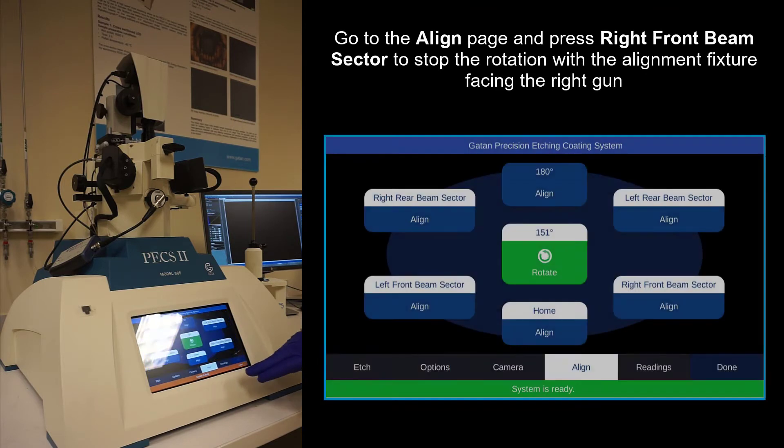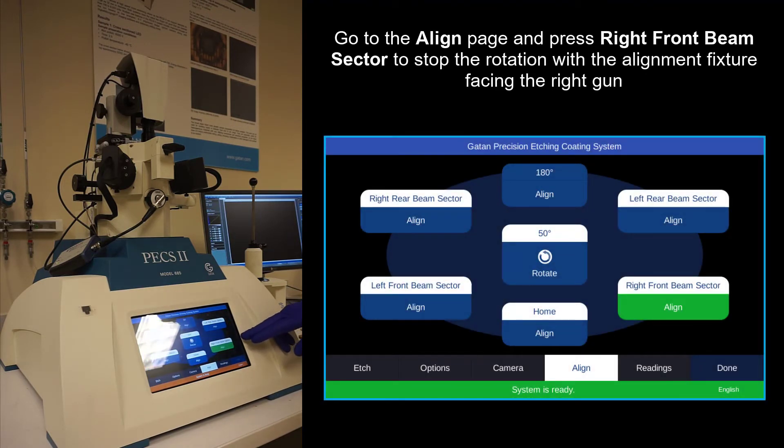Now go through the align page and go to the right front beam sector. And then this will rotate the stage so that it is perpendicular to the right gun. And now we will be able to see the surface there, align the right gun.